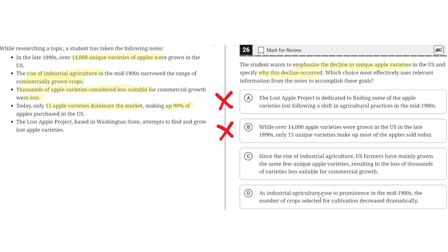D: As industrial agriculture rose to prominence in the mid-1900s, the number of crops selected for cultivation decreased dramatically. This is incorrect because this does not emphasize the decline in unique apple varieties. So D is incorrect, and the correct answer is C.